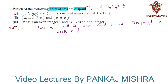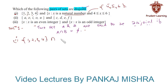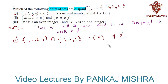Hence the given sets are not disjoint. Since the intersection of the set containing elements 1, 2, 3, and 4 and the set containing elements 4, 5, and 6 is the set containing element 4, which is not a null set, the given pair of sets is not disjoint.